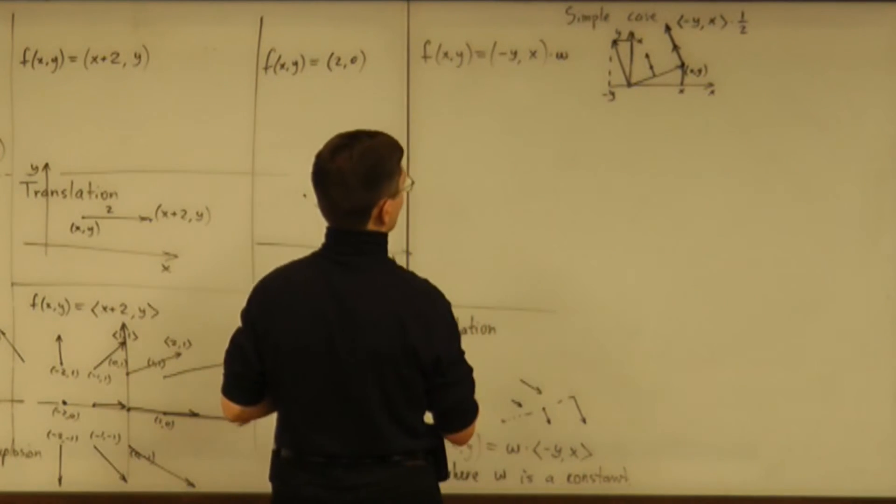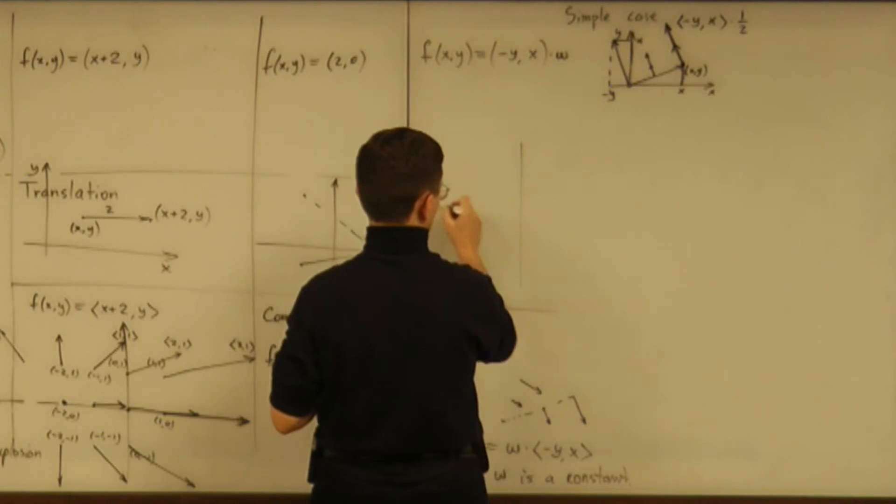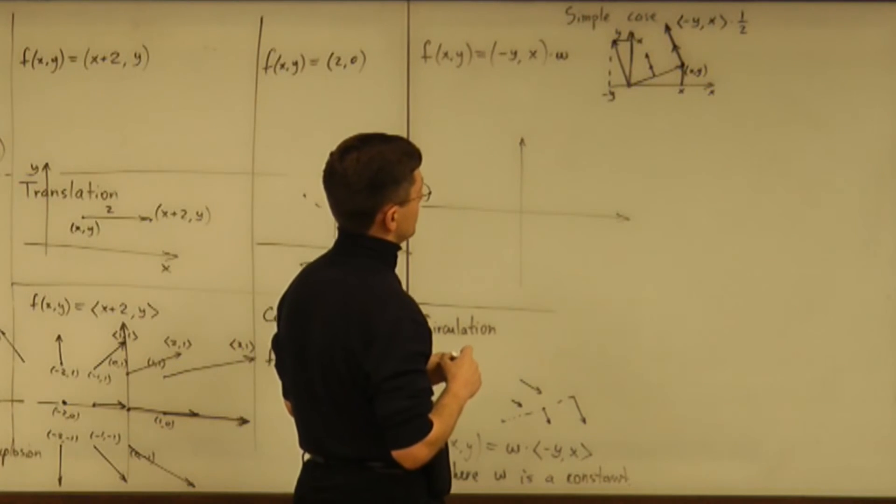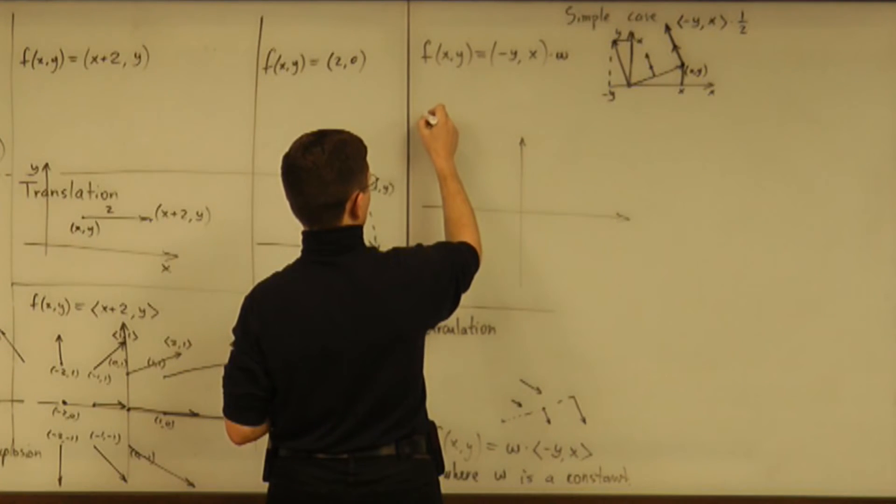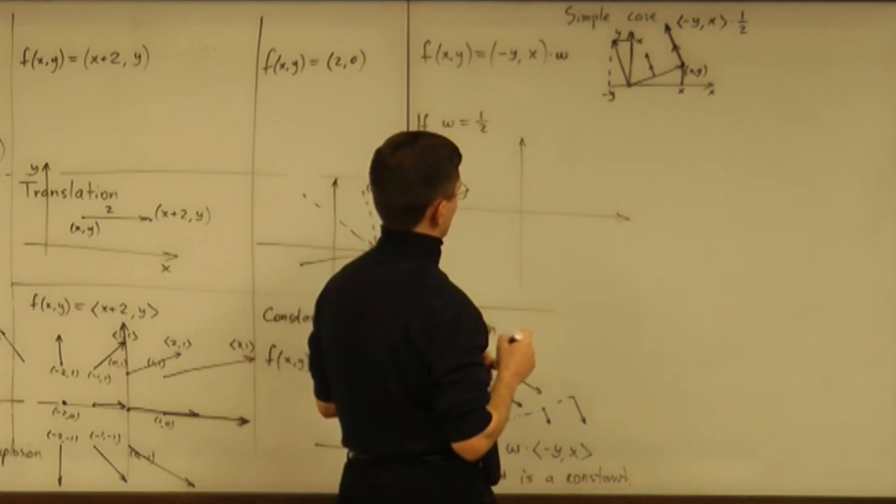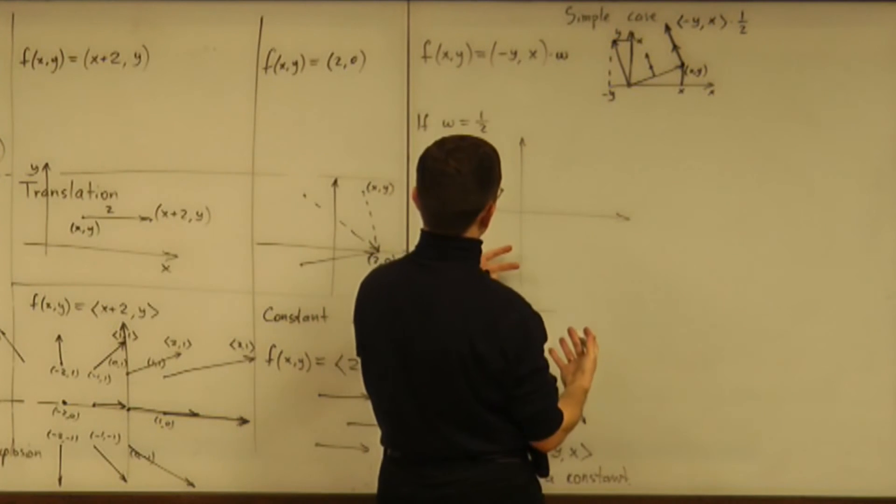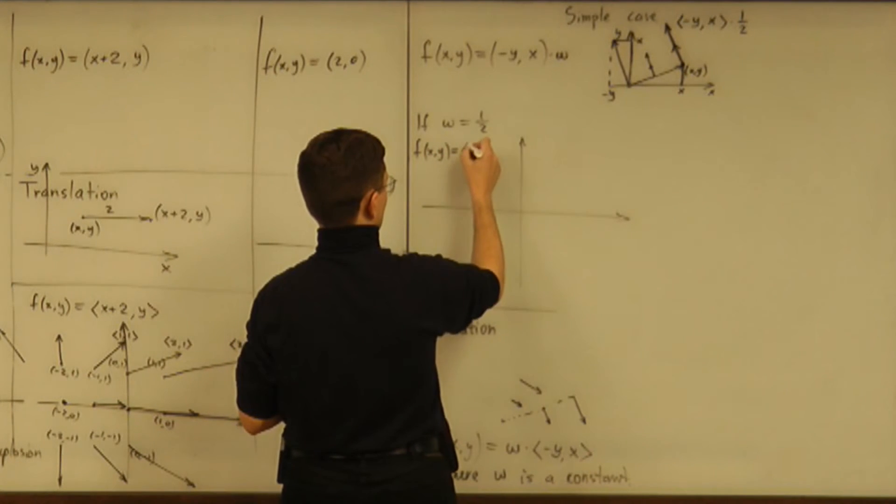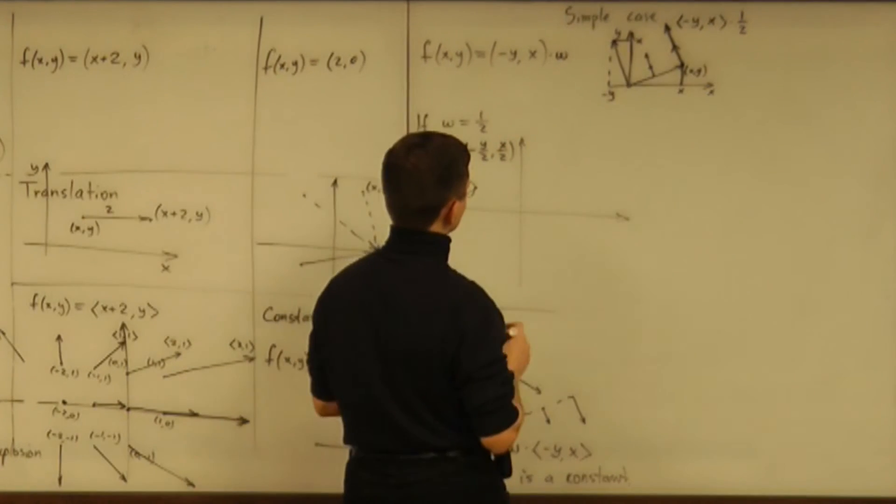All right. Now, having that formula and, well, we can look at geometry behind that. So what would be geometric interpretation of this? So what if I choose omega being one half? All right. So what kind of geometric transformation is going to be described by the function f of x, y equals a point minus y over 2, comma, x over 2. All right.